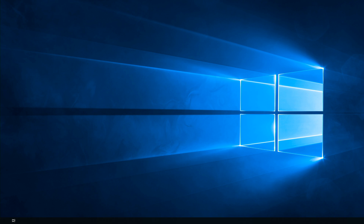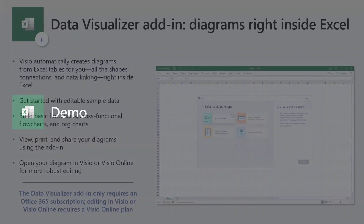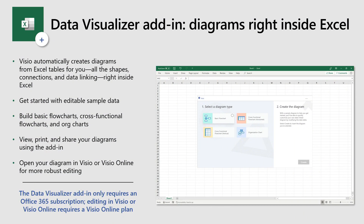What you saw until now is the Data Visualizer feature in Visio Desktop, available with Visio Online Plan 2, the subscription plan for Visio. The new thing we're working on is the add-in for Data Visualizer within Excel. We understand that to truly democratize business process mapping using Excel data, users should be able to create diagrams within Excel without having to install Visio or know anything about process mapping within Visio.